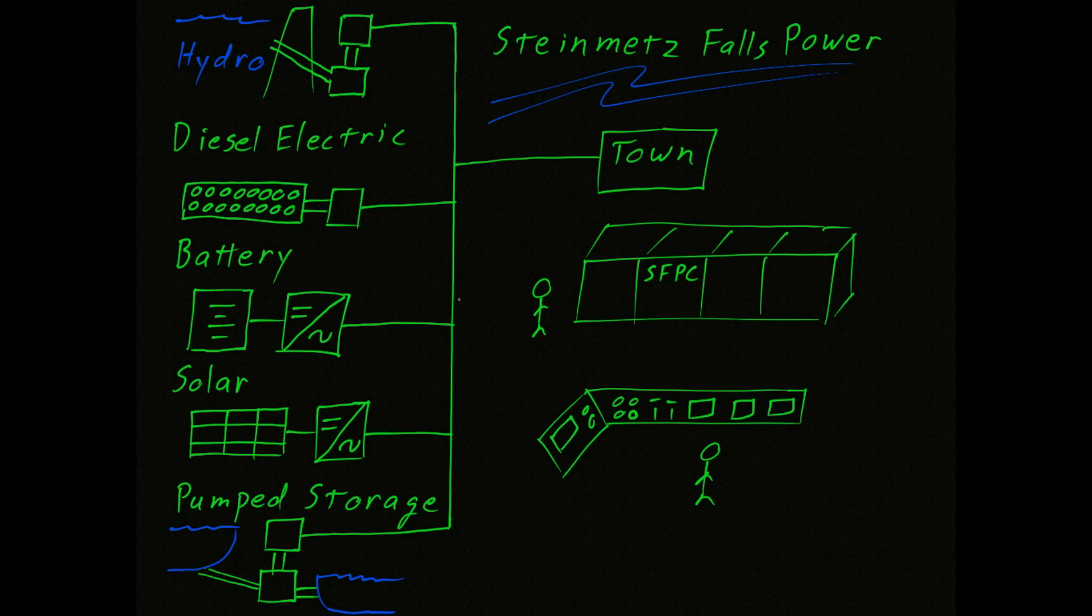The hydro plant was the first thing built when the town was established. As the name suggests, Stymets Falls used to have a waterfall. Not anymore. We installed a dam blocking the water, and then installed the turbine, as you see here.